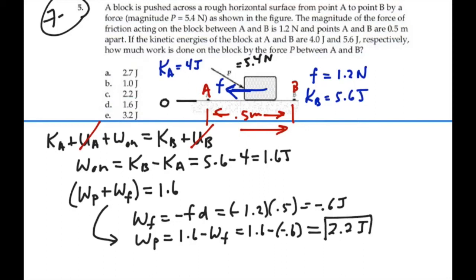So, the work done by force P is 2.2 joules, and we found that work without actually having to know the force P, even though we were given that. We didn't have to use that, and we didn't have to know the angle at which it was acting. We just kind of indirectly came up with the work done by that force by solving for everything else, and it came out to 2.2 joules.